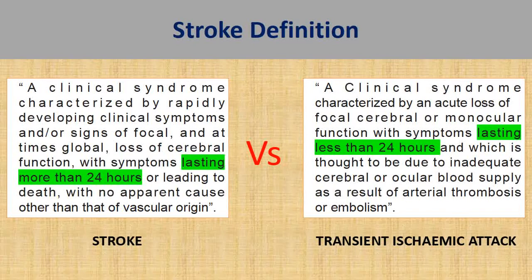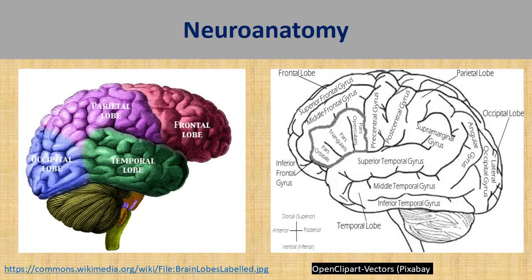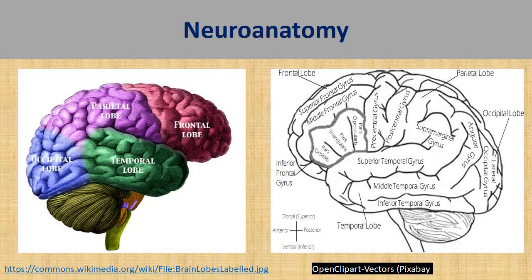Before discussing stroke classifications, I would like to emphasize that you need basic neuroanatomy knowledge to understand the subsequent parts of the lecture better. I have handpicked a few images to keep in mind as a reference. Basically, the human brain can be divided into a few important structures. There are four important lobes: the frontal lobe, parietal lobe, occipital lobe, and temporal lobe. Besides these, there are two other important structures — the cerebellum and the brainstem.